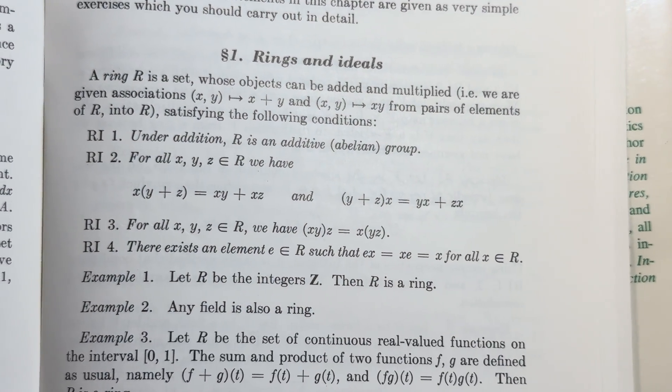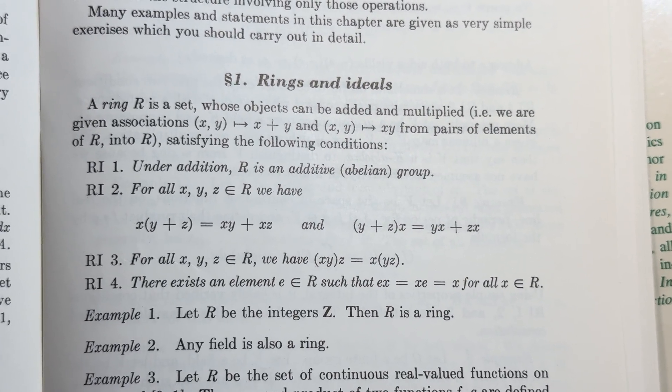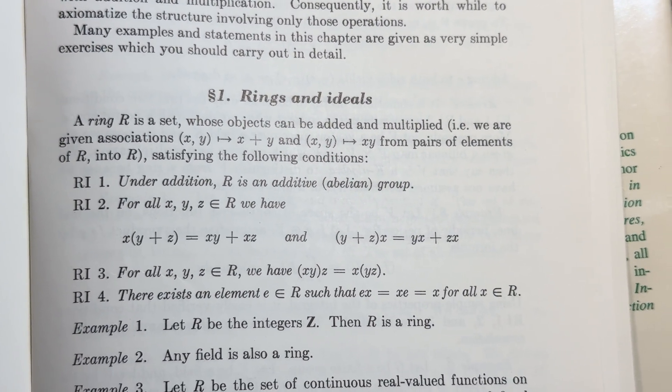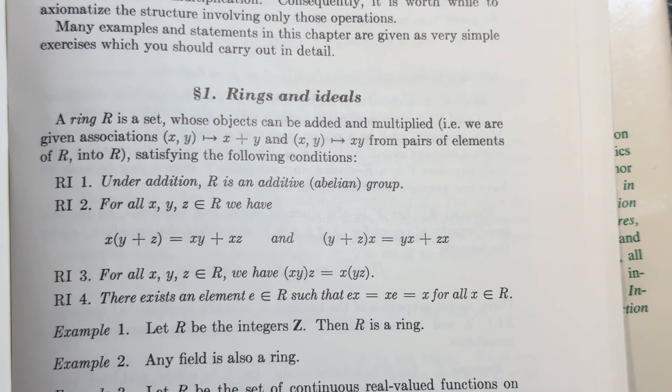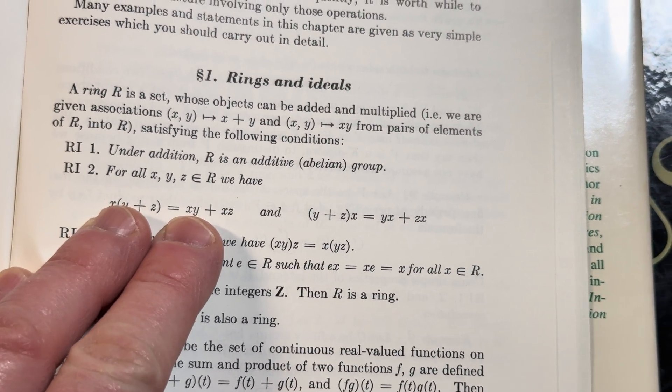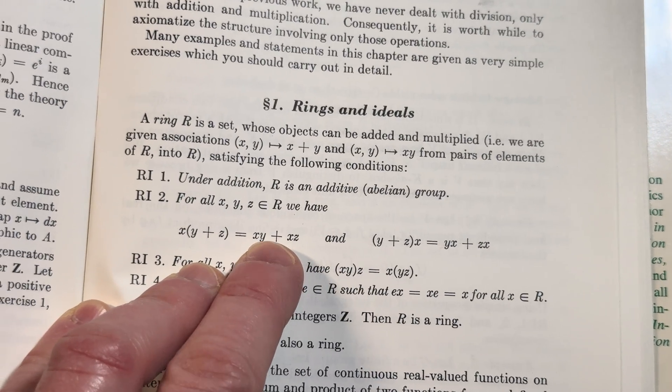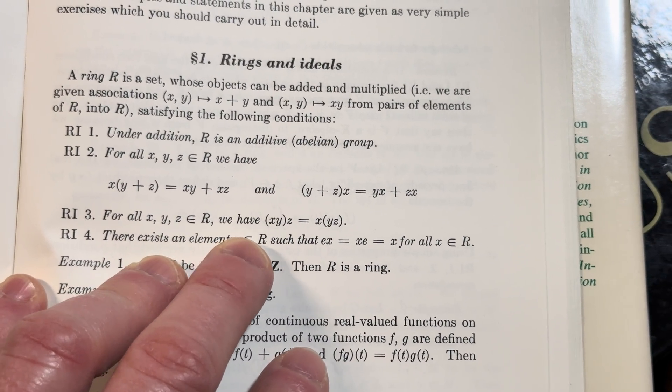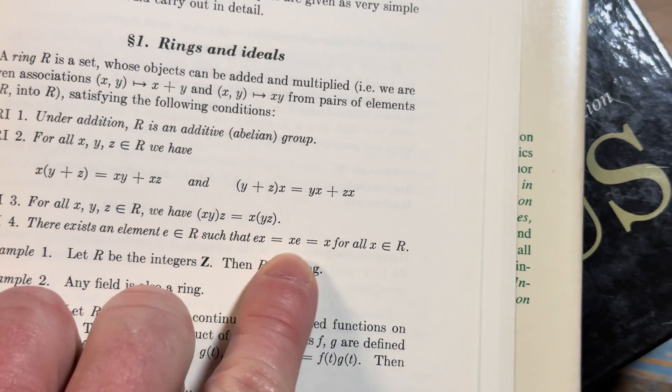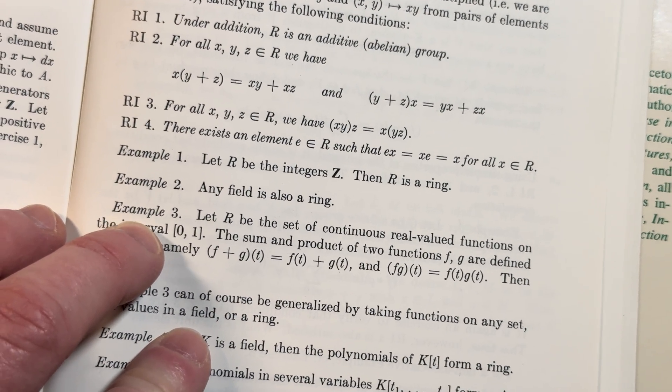A ring R is a set whose objects can be added and multiplied. We are given associations. So x, y goes to x plus y. You have two binary operations basically. And then x, y goes to x times y. From pairs of elements of R into R, satisfying the following conditions. Under addition, R is an additive abelian group. And then for all x, y, z, in R, we have that the distributive law holds. This is what connects addition and multiplication, right? This is the connecting property. And then for all x, y, z in R, we have that the multiplication itself is associative. x times y times z is the same as x times y times z. And then the last one is there exists an element e in R such that e x equals x equals x e for all x in R. So then we have some examples here.